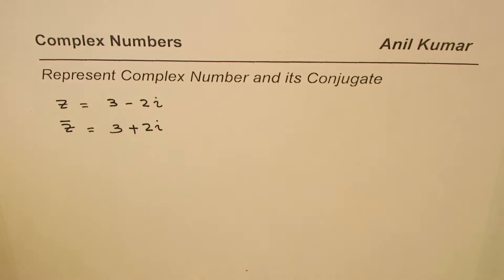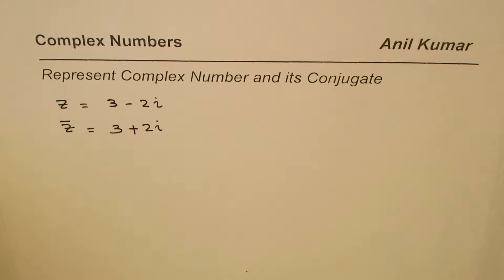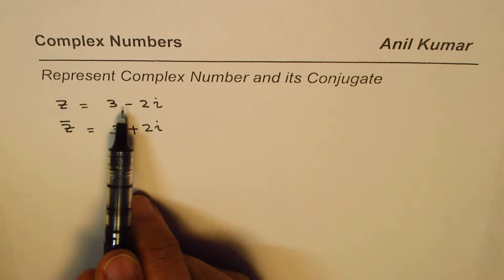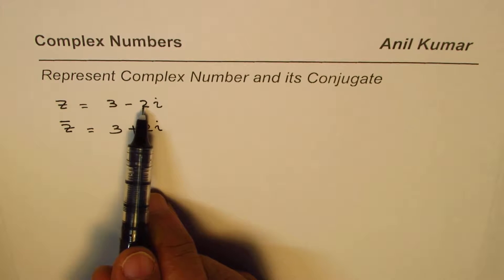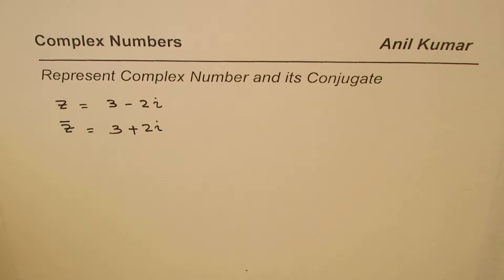So that becomes the conjugate of this particular vector. Now, the question is: how can we represent them on a plane? And another question is: from the complex number, if I have to sketch the conjugate, what should I do? These are the two questions we'll understand and answer in this video.